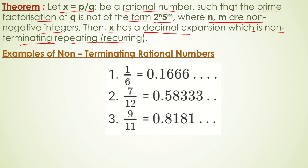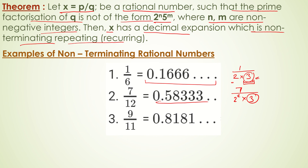For example, 1 by 6: the factorization of 6 is 2 into 3, so 3 is present along with 2, making the decimal expansion non-terminating. Similarly, 7 by 12 equals 7 by 2 squared into 3 — again 3 is present, so the decimal expansion is non-terminating. And if 11 is present in the denominator, the decimal expansion is also non-terminating.